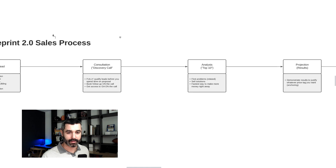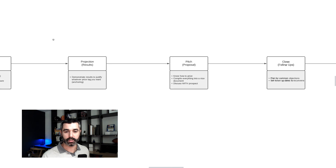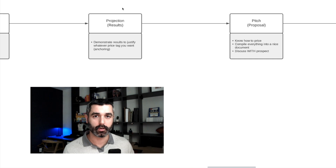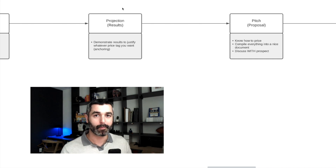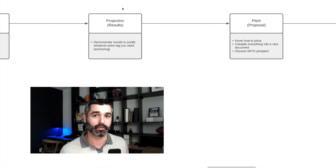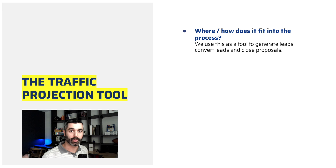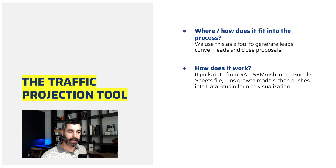Looking even deeper at our sales process, we do our consultations, our analysis, and then our projections. This projection part is so important because what we need to do is show them that their investment is safe — that if they give us $5,000 in terms of a retainer, we are going to return more than $5,000 in terms of traffic and sales. It's marketing 101, yet so many SEO agencies don't do this. Instead of answering the question of what can I expect from working with you, they say it depends. And that 'it depends' is costing you millions of dollars in revenue. This very simple spreadsheet will help you solve that problem right away on your next proposal.